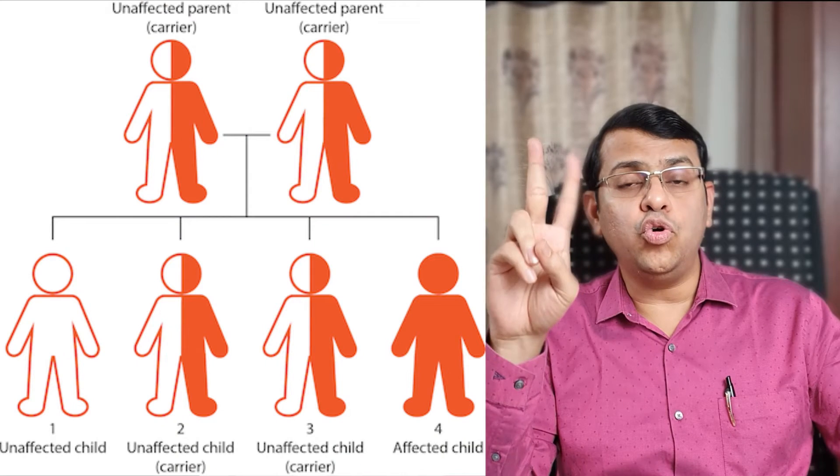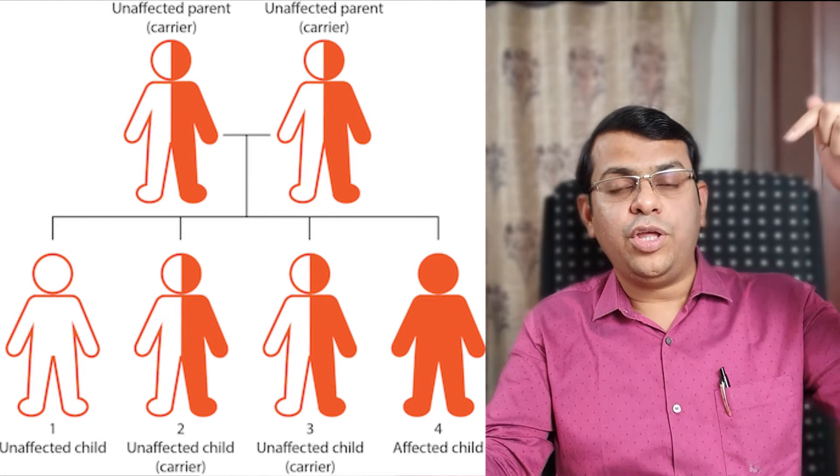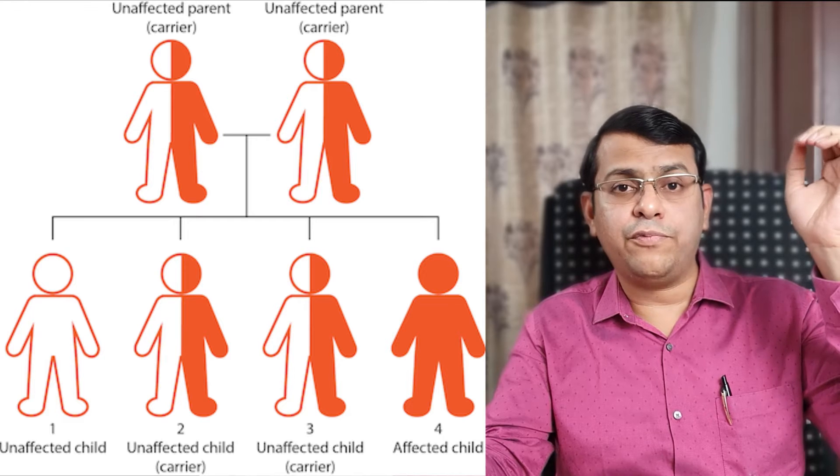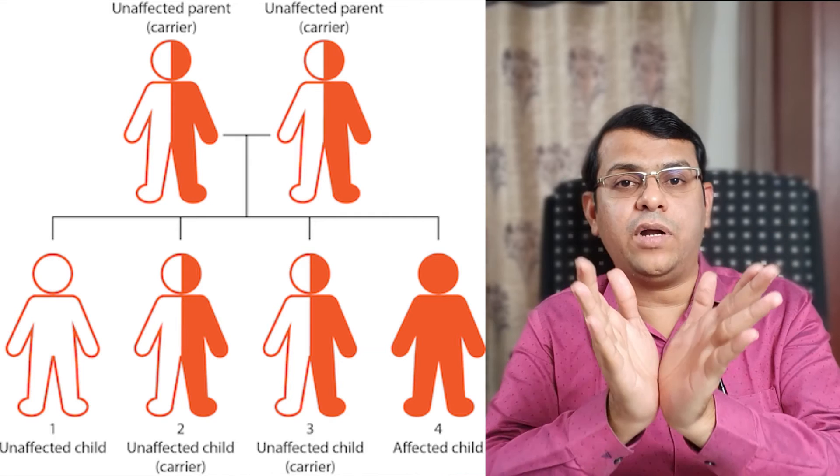Genetic disorders — especially those disorders which are of recessive inheritance — meaning you need to have two copies of abnormal genes to manifest that disorder. If you have the defective copy from both the mother and the father, then you manifest that disorder. The chances of both these genes being defective is more in inbreeding or consanguineous parentage. That is why these genetic disorders are more common among children born to consanguineous parents.